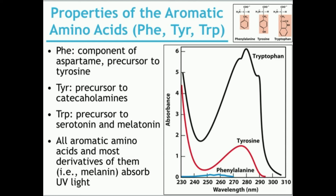Phenylalanine is also a precursor to tyrosine. Tyrosine has a very important function — it's a precursor to catecholamines, which are neurotransmitters or hormones such as dopamine, norepinephrine, and epinephrine. Additionally, tyrosine can be processed into melanin, which is the component of skin that gives it a darker color; the more melanin you have, the darker your skin. Tryptophan is a precursor to serotonin and melatonin.